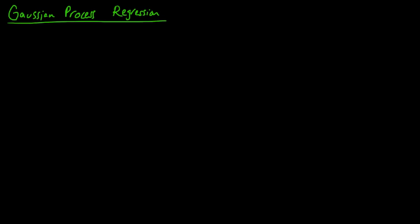We've been playing around with Gaussian processes for a while now, and at this point you may be wondering: these Gaussian processes seem kind of cool, but are they really good for anything? What does this have to do with machine learning anyway? As you may have guessed, I'm about to tell you that Gaussian processes are a very powerful tool for regression.